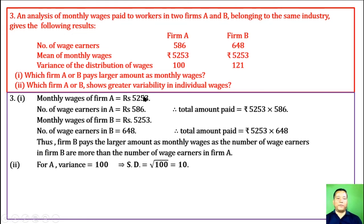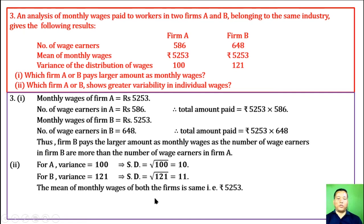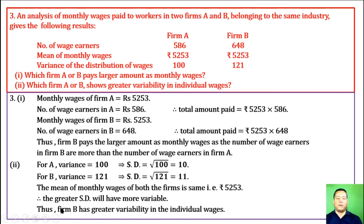Which farm A or B shows greater variability in individual wages? Farm B variance is 121, standard deviation is square root of 121, which is 11. The mean is used with standard deviation to compare variability. The mean of monthly wages of both farms is the same: Rs 5253. Therefore, the greater standard deviation will have more variability. Thus, farm B has greater variability in the individual wages, as farm B's standard deviation is 11, meaning greater variability is widely dispersed.